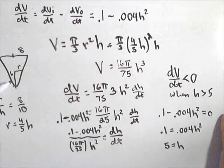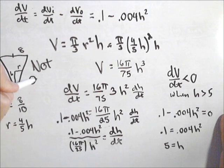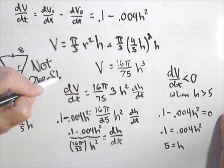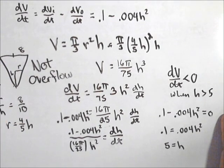So what that tells us is if the height is less than 5, then the height is increasing. But once we get to the middle of the cone, it stops increasing. And after 5 meters, it actually starts decreasing. So it will not overflow because the tank itself is 10 meters high. Once we get over 5 meters, it actually has a negative rate, so it's actually going to start decreasing.